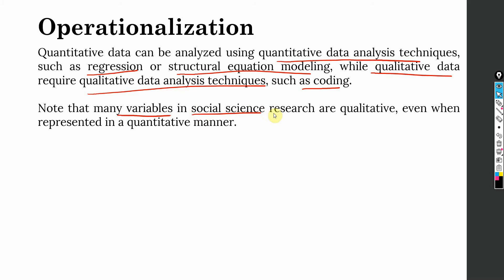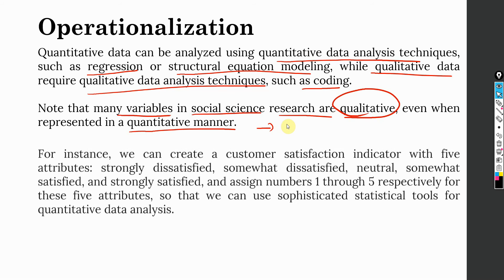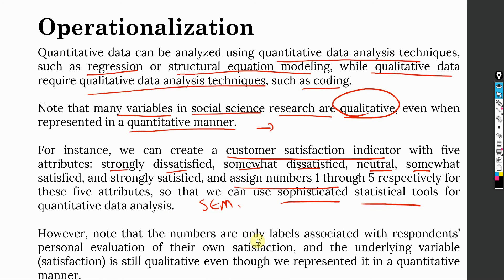Note that many variables in social science research are qualitative, even when they are represented in quantitative manner. How are they represented in quantitative manner? The response from the respondent is categorized in the form of numbers. For instance, we create customer satisfaction indicators and we assign numbers to these attributes, to the response scale. Then we use sophisticated statistical tools for our quantitative data analysis. Normally, these days we go for structural equation modeling. However, note that the numbers are only labels associated with the respondent's personal evaluation of their own satisfaction. The underlying variable satisfaction is still qualitative even though we represented it in quantitative manner.